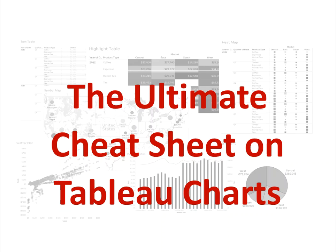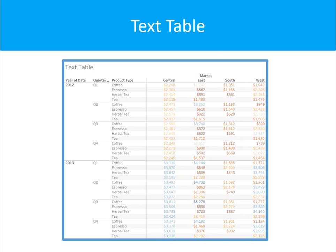Now let's talk about the types of charts. There are 24 available charts in Tableau's Show Me feature. We can discuss each one and talk about when we should be using those charts and what the minimum requirements are. We can get started with a simple text table, also called a cross tab. This is similar to an Excel table — it allows you to see your data in rows and columns. It's not the best visual chart, but sometimes you want to see just the raw data. You could dress up this table using color. Minimum requirements are one or more dimensions and one or more measures.